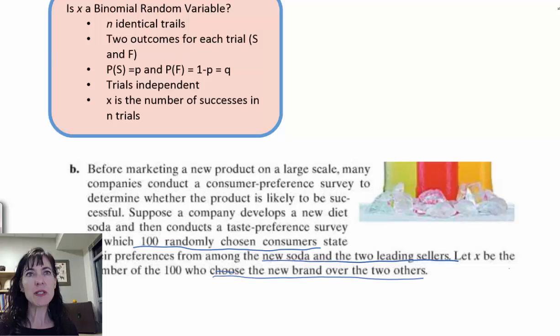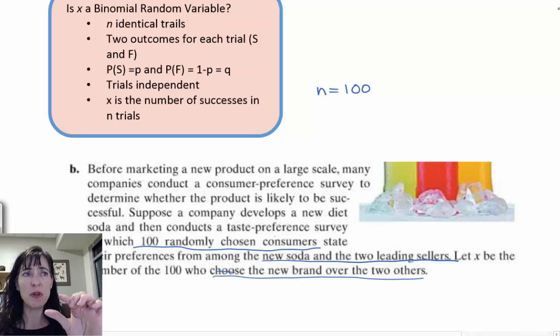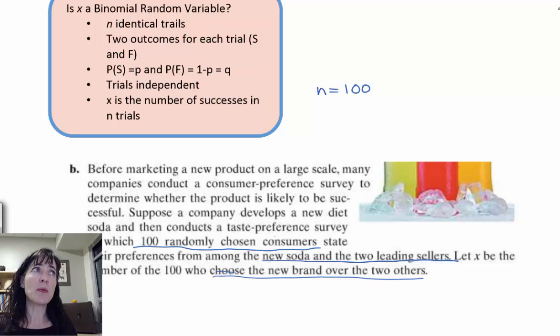So let's start at the top of the list. Do we have n identical trials? It looks like we have 100 people doing the taste test, so we have n = 100. We can assume they were all doing the same taste test—tasting the new soda, tasting each of the other two, and stating which one they preferred. So I'm going to assume those are identical.